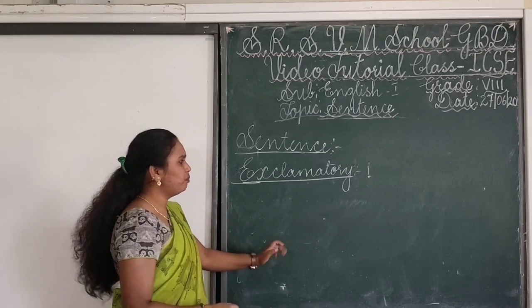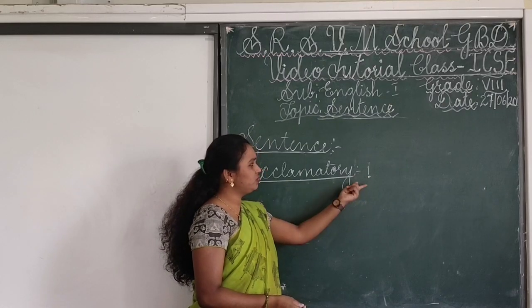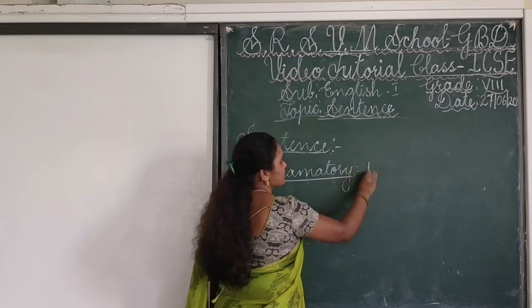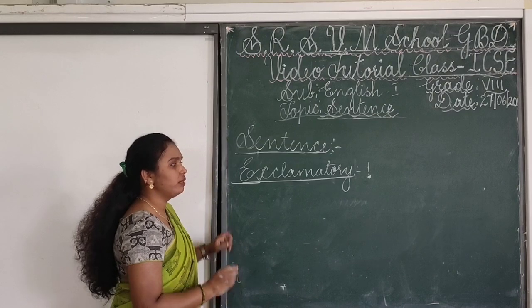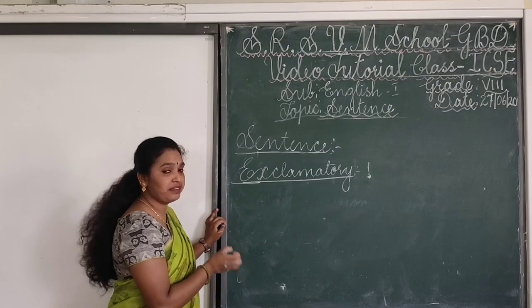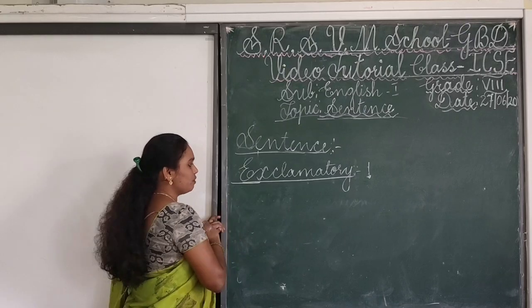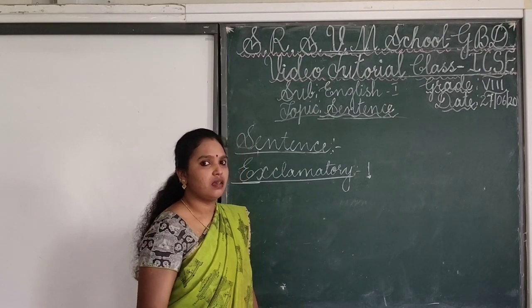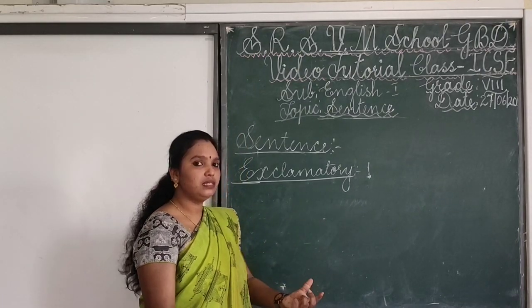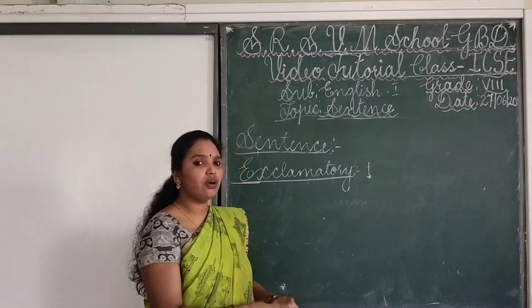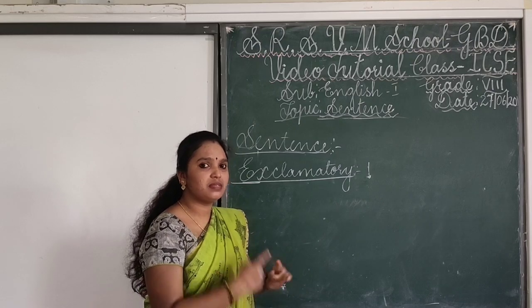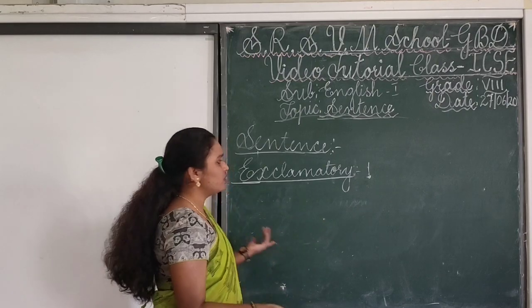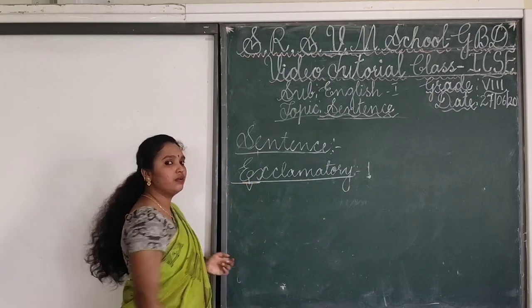In the exclamatory sentence, I have put an exclamation mark — this punctuation describes the feeling or the expression of a person. It shows various expressions and feelings of people. For example, I may be very angry, very shocked, very surprised, very happy sometimes, or very sad. We worry about some things. Those expressions are expressed under exclamatory sentences.